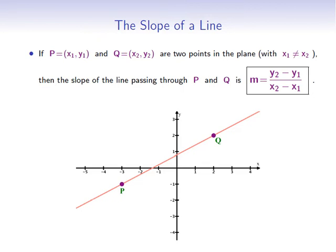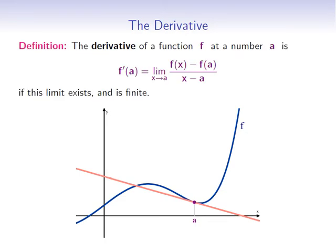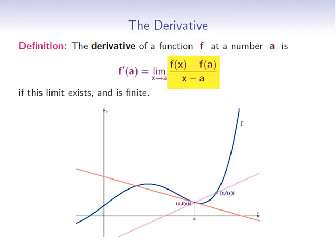Now let's proceed with the definition of the derivative. Given a function f and a number a in its domain, the derivative is defined as the slope of the tangent line to the graph at the point corresponding to a. More precisely, the derivative of f at a is the limit as x approaches a of [f(x) − f(a)] / (x − a), if this limit exists and is finite. The quotient represents the slope of a secant line through two points on the graph. As x approaches a, one point moves toward the other, the secant line approaches a tangent line, and in the limit we obtain the slope of the tangent line at a.